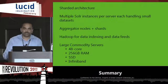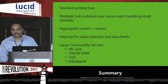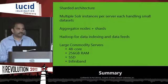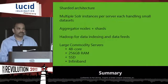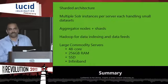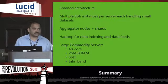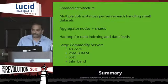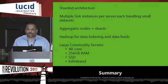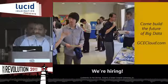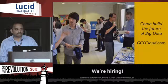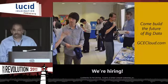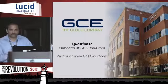To summarize our design decisions: shard architecture for the Solr cluster with multiple shards; aggregator nodes with higher heap size and data nodes with lower heap size; Hadoop for data indexing and data feeds; large commodity servers with 48-core CPUs, 256 GB RAM, solid state drives, and InfiniBand. We are continuously enhancing the cloud features. Feel free to come see me if you are interested, and here is my email. Thank you very much.